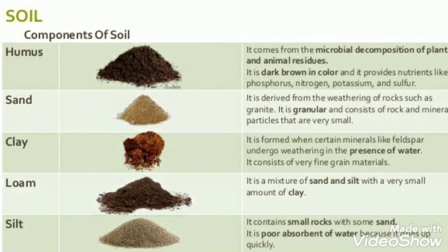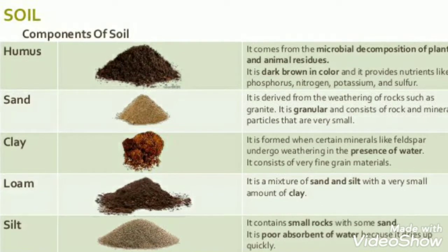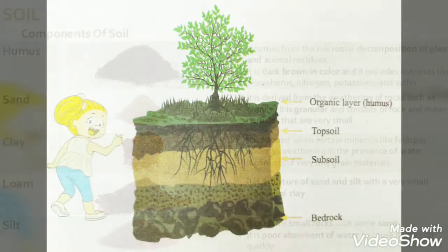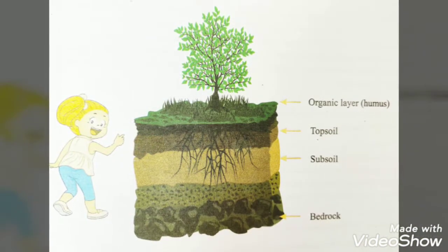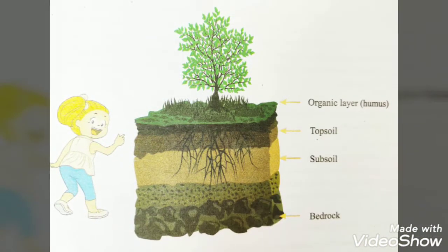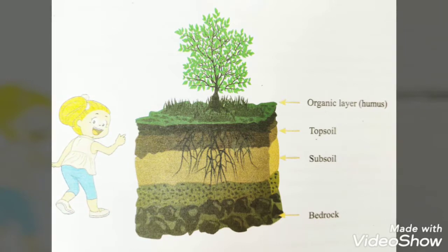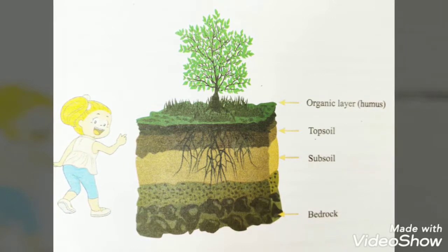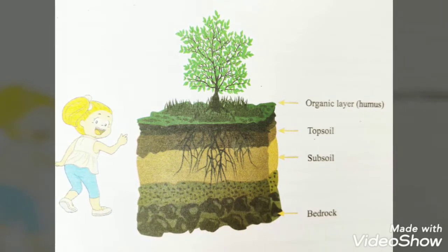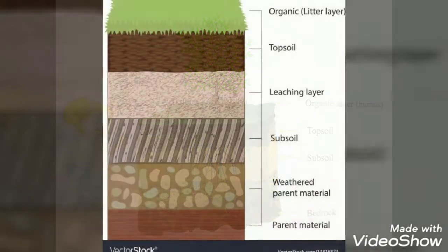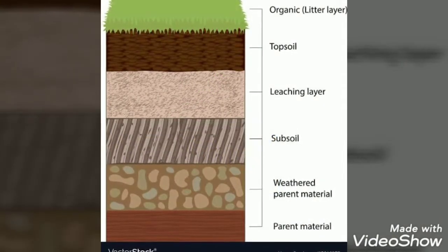Soil layers. Soil is made up of distinct horizontal layers. These range from the rich organic upper layers, often known as humus and the topsoil, to the underlying rocky layers also known as subsoil and bedrock.